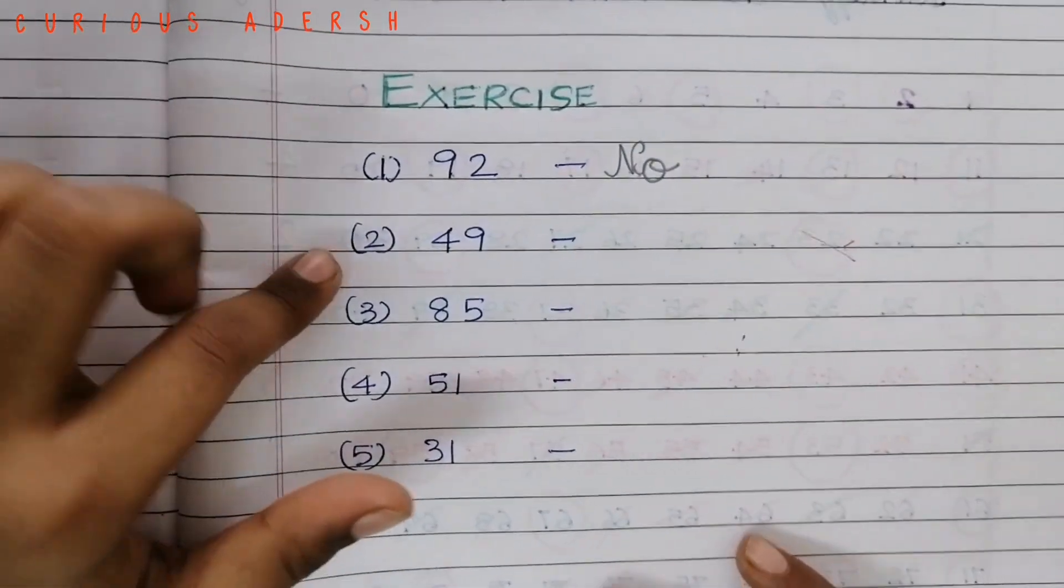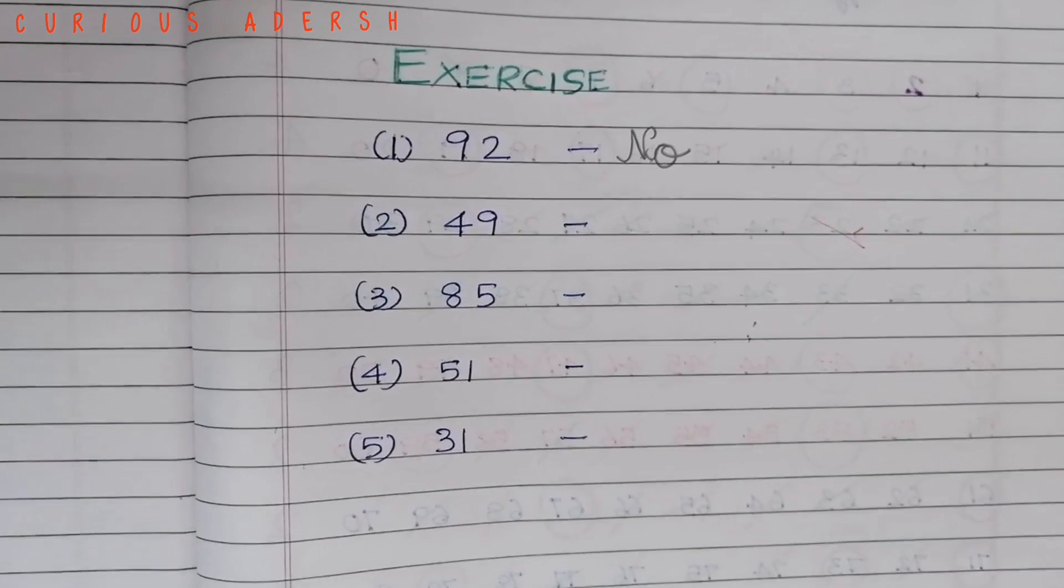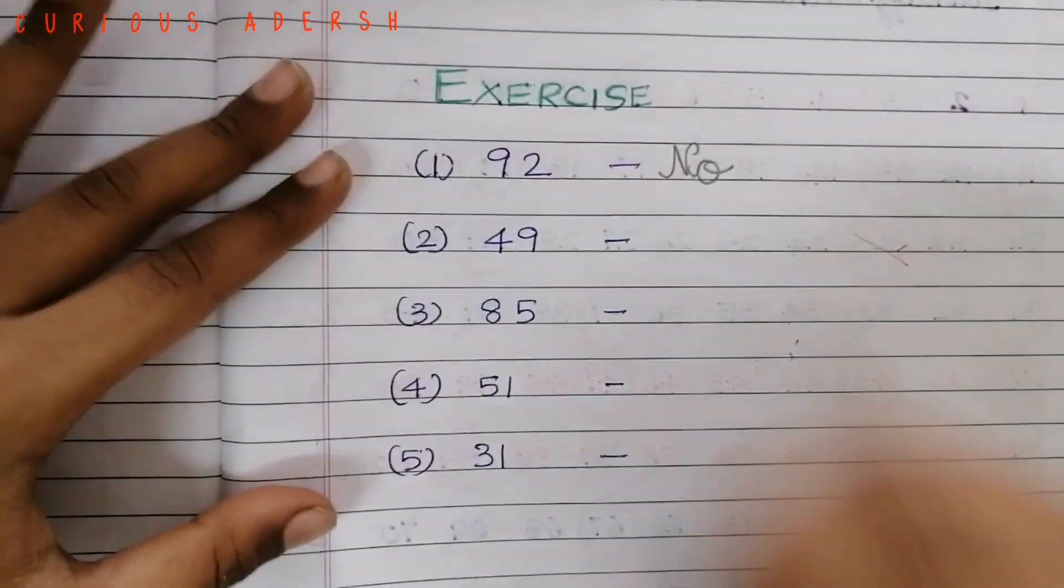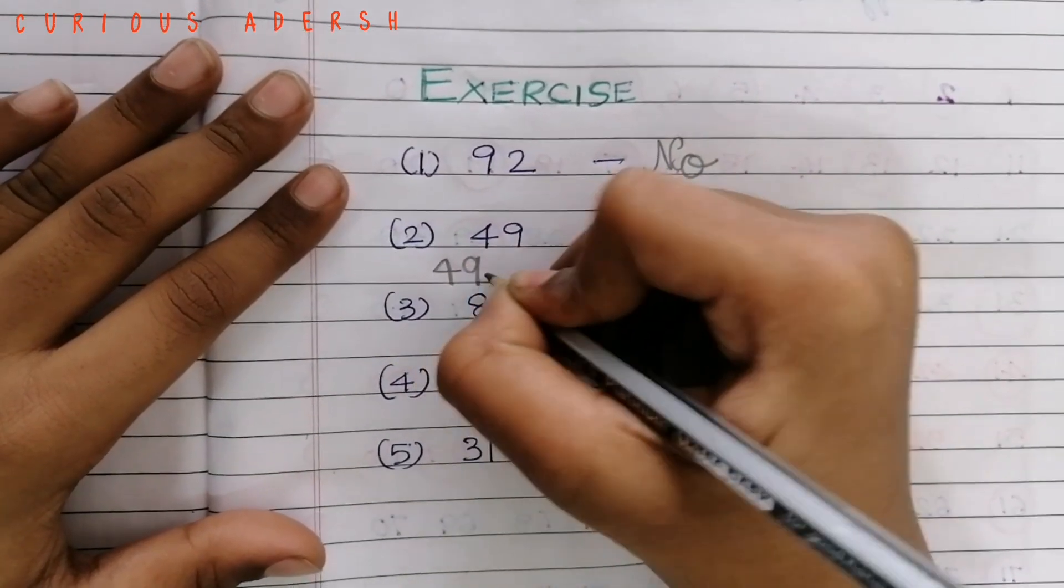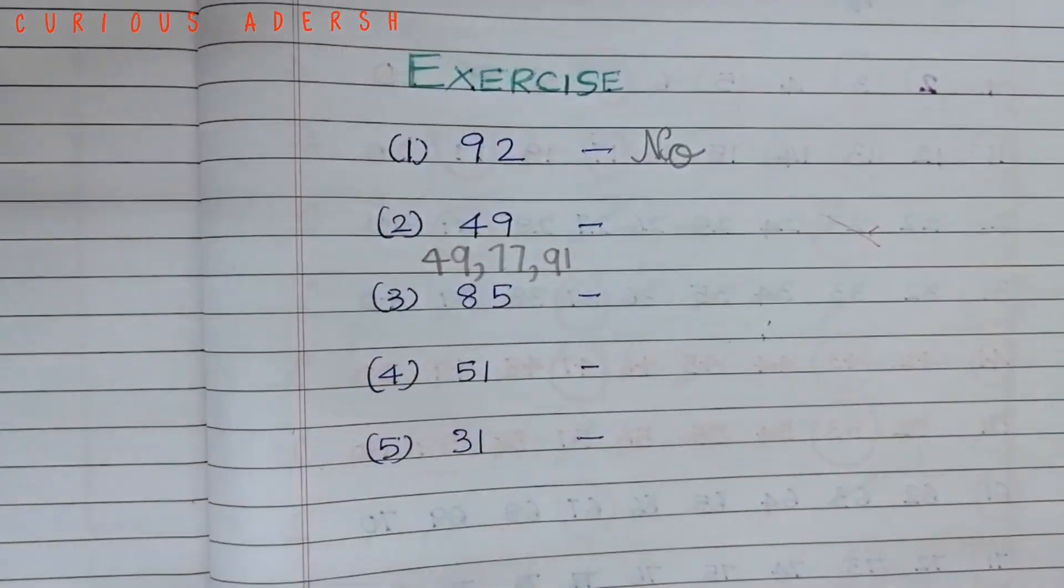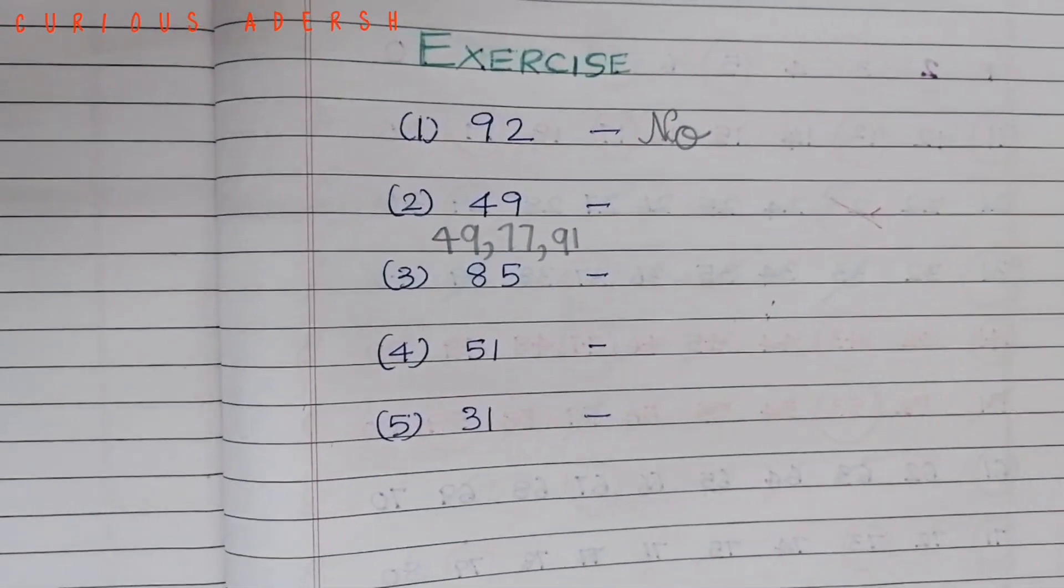Is 49 a prime number? No. Because it comes in those 3 numbers. What are those numbers? 49, 77 and 91. So 49 is not a prime number.